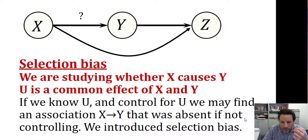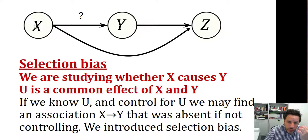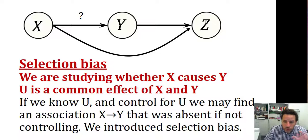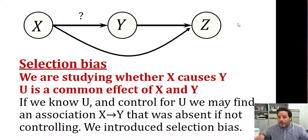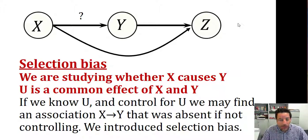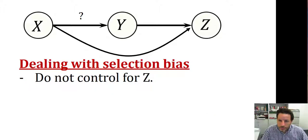There is another important issue, which is selection bias — which is almost the opposite. Here we want to investigate whether X and Y are causally related. We already know that Y is causally related to Z, and X causes Z as well, so Z is a common effect of X and Y. Selection bias is introduced if we control for Z. So basically, in order to avoid selection bias, we should not control for Z — which is the opposite of what we do with confounding, where we should control for the confounding variable.